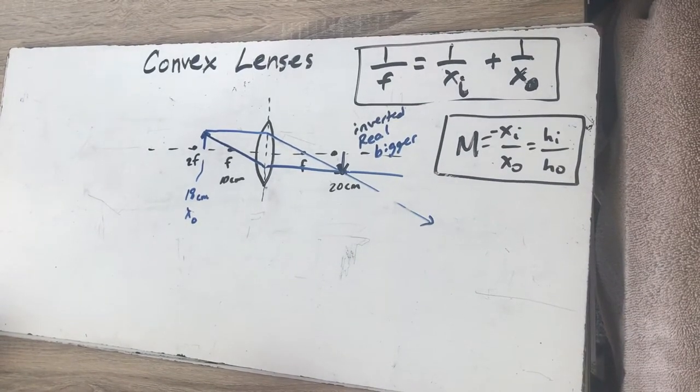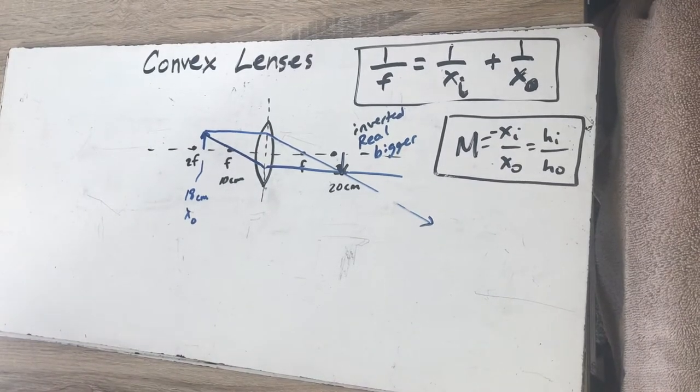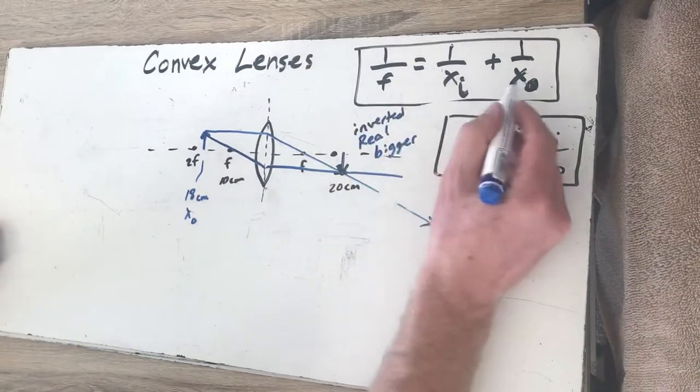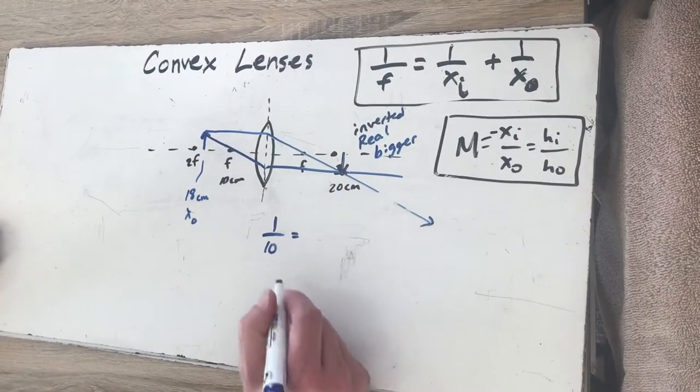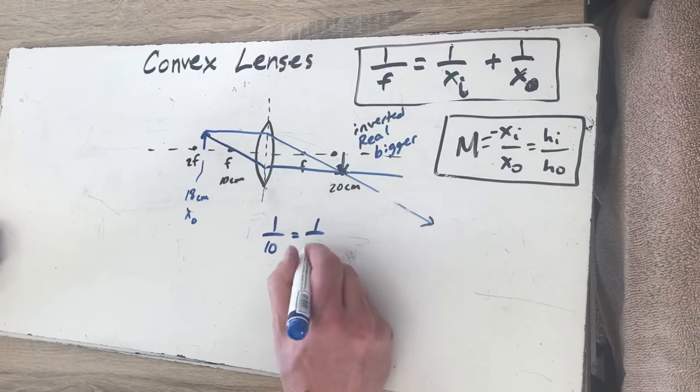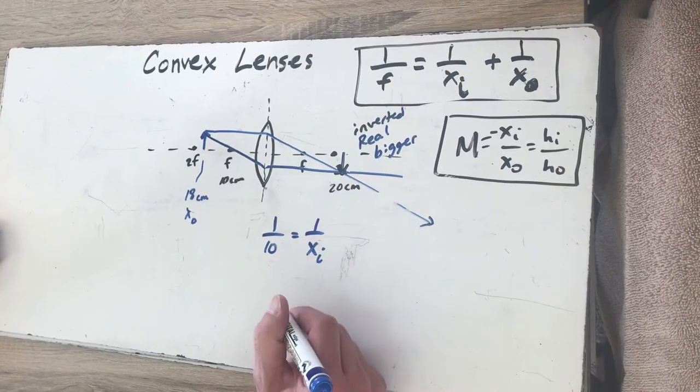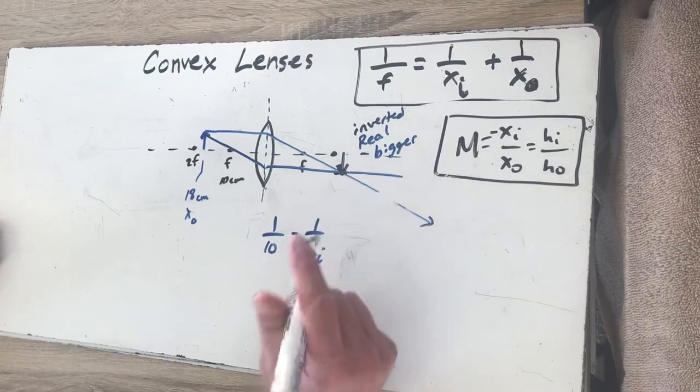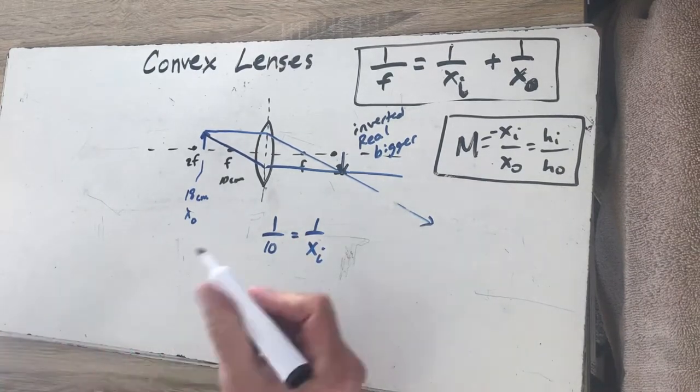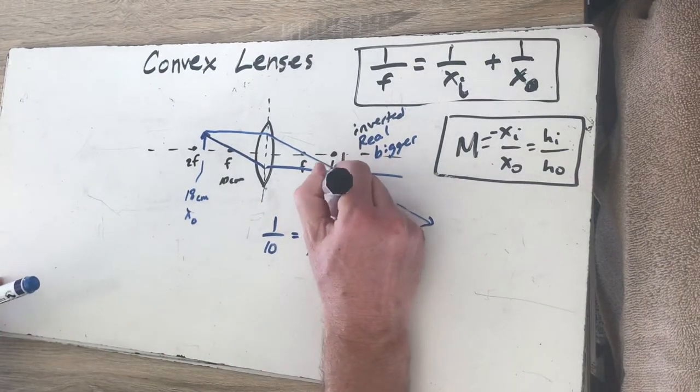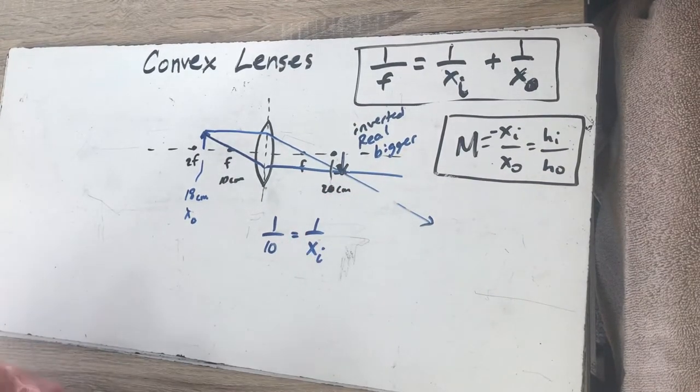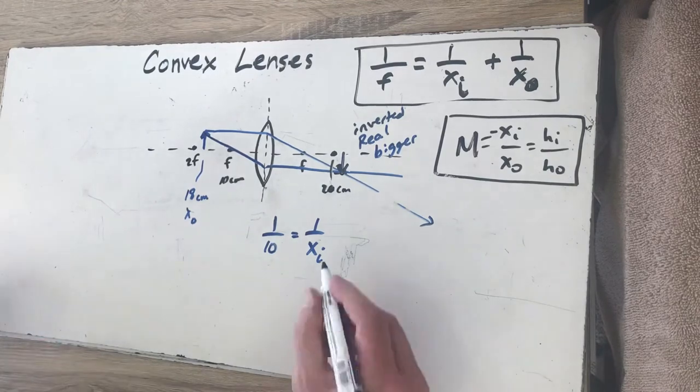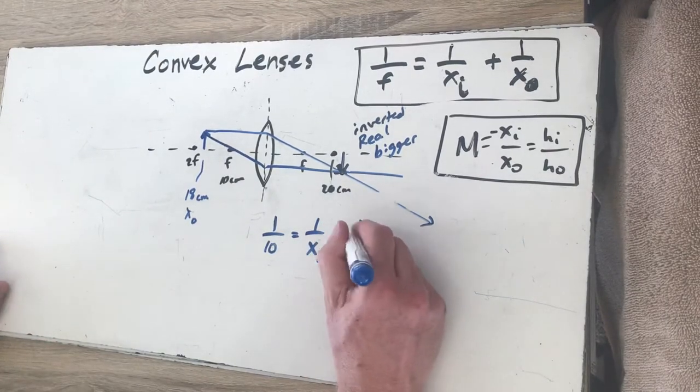Okay, now let's analyze the numbers and see where those things shake out. So the way we did this before, we did this equation right up here: 1 over the focal length, which is 10 centimeters, equals 1 over XI, which is the distance of the image, and we don't know that. Right now it looks like it's a little beyond 20. So if this is 2F, that's going to be 20 centimeters right there, looks like it's a little past that. We'll see how accurate my drawing really is. And then 1 over XO, and we know XO right over here is 18 centimeters.